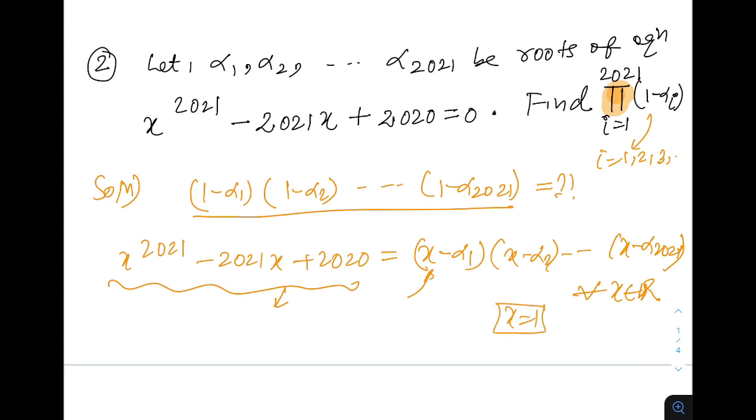So RHS is a product of 1 minus alpha i and LHS will give 1 minus 2021 plus 2020 which gives 0 as our answer. So as you can see it was a beautiful problem based on basic concept. The idea was factor theorem. Whenever you have polynomial problem try to give a thought about writing in the factored format.